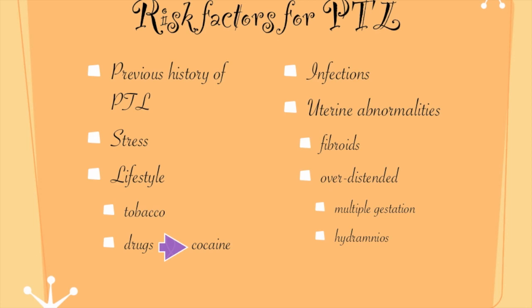Although the exact cause of preterm labor is difficult to identify, there are many risk factors that increase the chance that a woman will develop preterm labor. If she has a history of preterm labor in a previous pregnancy — even if she eventually went to term — there's an increased risk of PTL with the current pregnancy. Stress can induce preterm labor, coming from home life, relationships, a job, caring for her own children, being a nursing student, etc. A woman's lifestyle may also cause the onset of labor. Smoking is cited as a risk factor, as is drug use. Cocaine use was a common cause of PTL in the late 70s and the 80s.